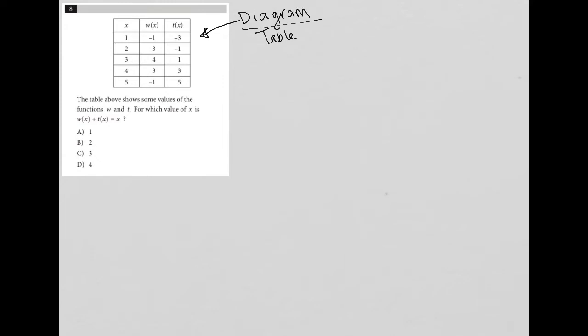Let's take a second to see if we understand what's going on in this table. We have these columns. The first column is of x values, so we have 1 through 5, and then we have w of x and t of x, which basically means when x is 1, w of x is negative 1. When x is 1, t of x is negative 3.